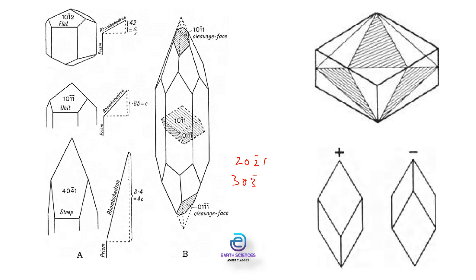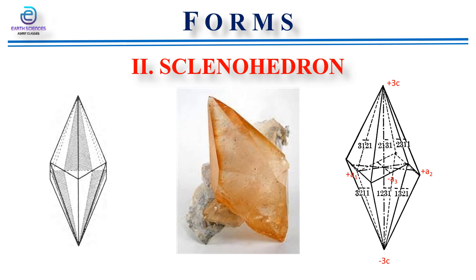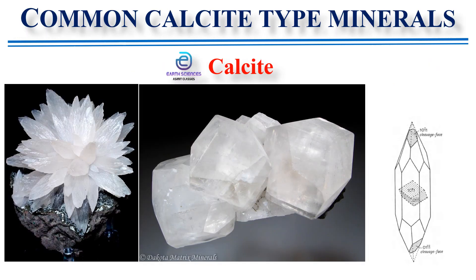The second form in the calcite class is the scalenohedron. A scalenohedron is a solid bounded by 12 faces, each of which is a scalene triangle. Each face cuts all three horizontal crystallographic axes and also the fourth vertical crystallographic axis, all at different lengths. The general symbol is (h k i l), and an example is (2 1 3̄ 1), as represented in this diagram.